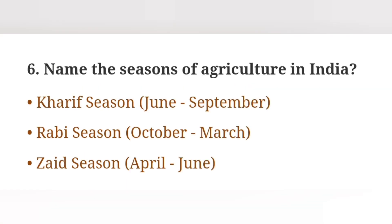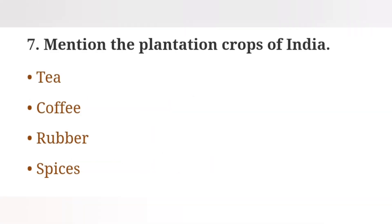Question 6: Name the seasons of agriculture in India. Question 7: Mention the plantation crops of India. Plantation crops include Tea, Coffee, Rubber and Spices.